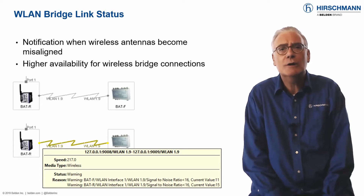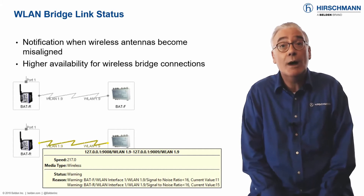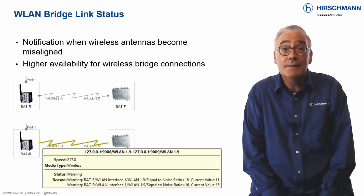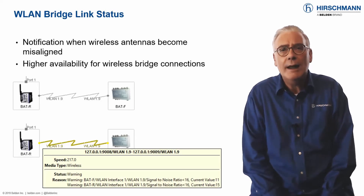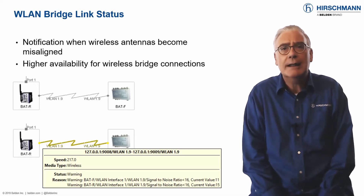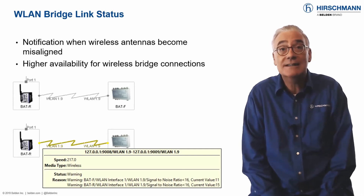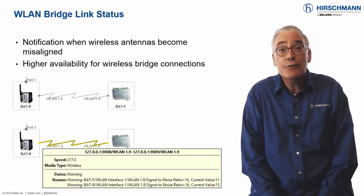With modern encryption and authentication techniques, communication over wireless links is secure. This still leaves the question of reliability. When a wireless bridge link is installed, the antenna alignment is perfect, and therefore the data throughput is maximized.